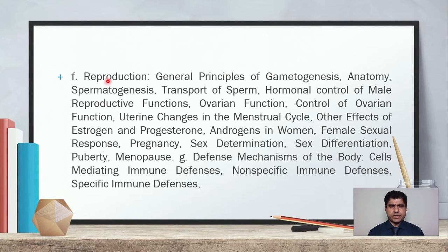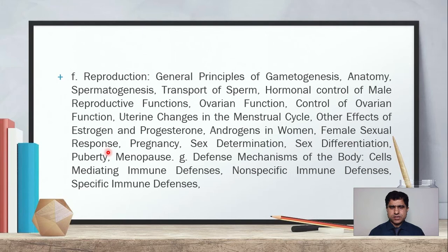Subheading F will be the reproductive system, covering general principles of gametogenesis, anatomy, spermatogenesis, transport of sperm, hormonal control of male reproductive functions, ovarian function, control of ovarian function, uterine changes in the menstrual cycle, other effects of estrogen and progesterone, androgens in women, female sexual response, pregnancy, sex determination, sex differentiation, and puberty.